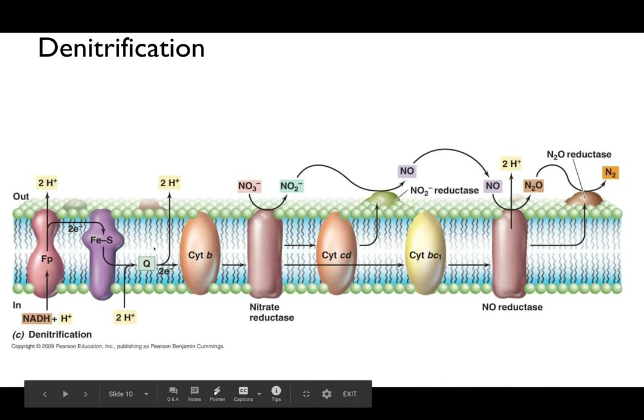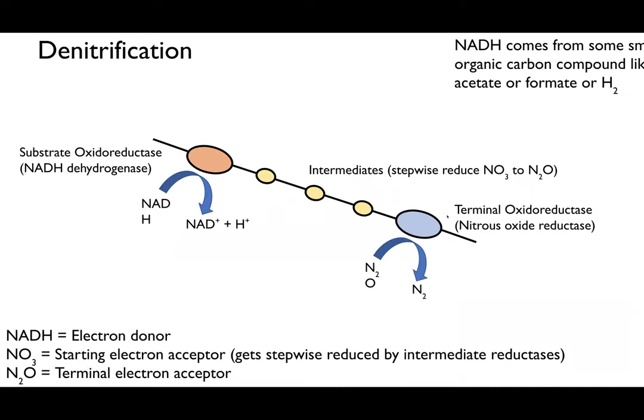That's just a refresher of some important metabolisms, but remember it all starts with the electron donor and electron acceptor. If you don't remember anything else from our metabolism lecture, just focus on this very simplified version: you have an electron donor, an electron acceptor, some intermediates, and enzymes that carry the electron all the way through. The electron acceptor can be oxygen, nitrogen, sulfur, carbon, or any number of different things.